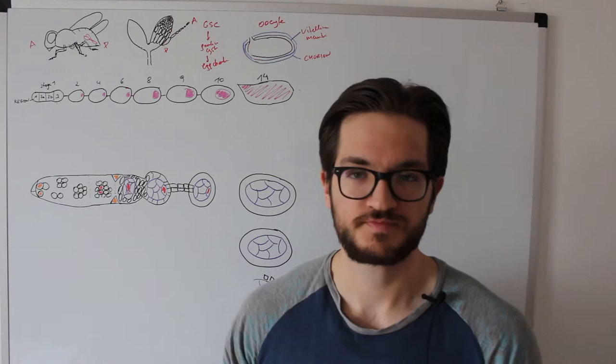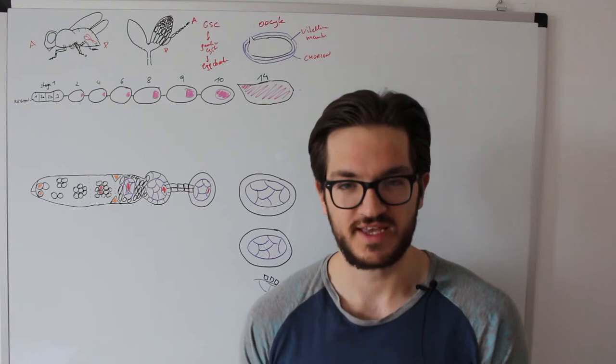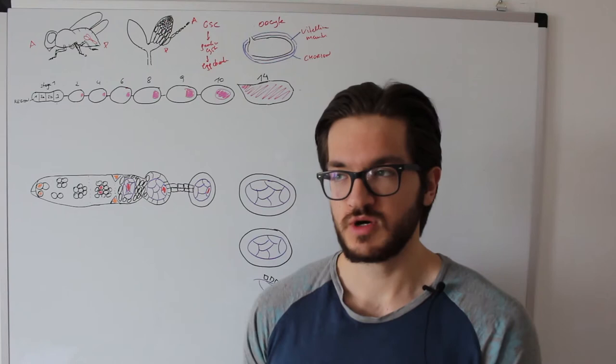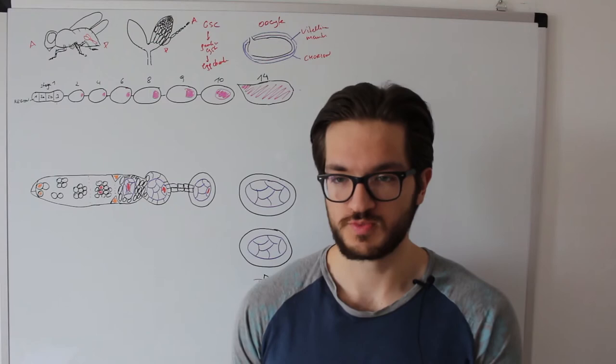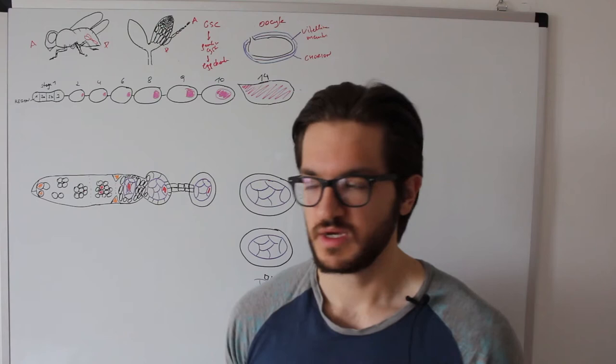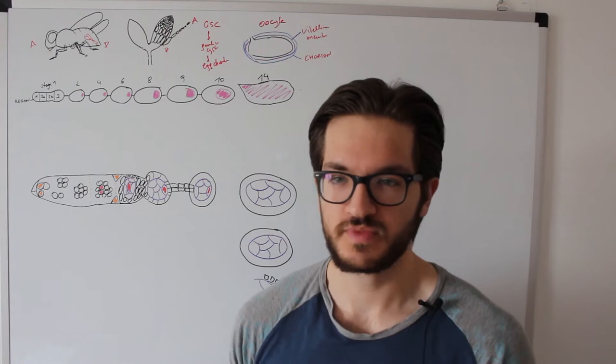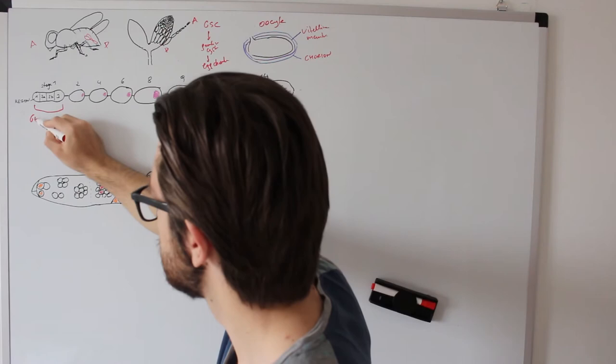One more thing worth mentioning is that not each of these 14 stages is occupied by one egg chamber all the time, because there are only seven to eight egg chambers usually developing simultaneously, and each stage takes variable amounts of time. The most important stage is stage 1, because at the anterior end the germline stem cells are located, while at the posterior end the whole egg chamber hatches into the rest of the ovariole. It is so important that it got its own name, and we call it the germarium.